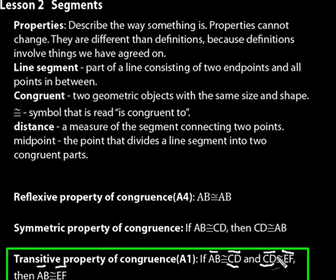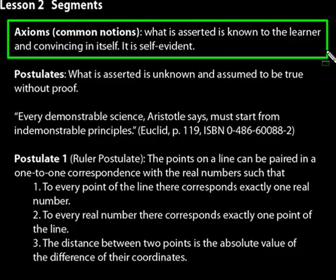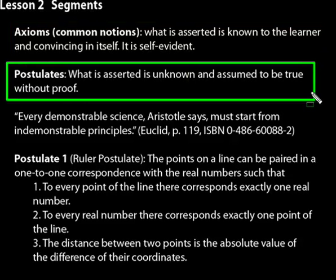So axiom one is basically the transitive property of congruence, specific to line segments. But as a more general statement about equality — things equal to the same thing are equal to each other — it applies beyond just line segments. Now let's compare axioms and postulates. Axioms, or common notions, are what is asserted and known to the learner as convincing in itself. Postulates, on the other hand — what is asserted is assumed to be true without proof.